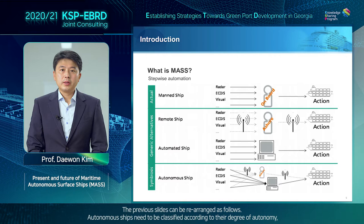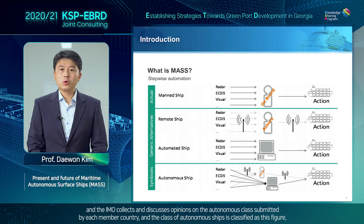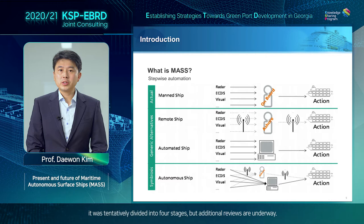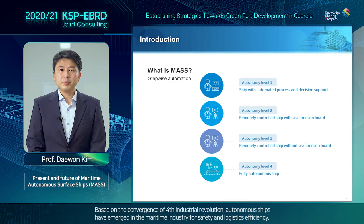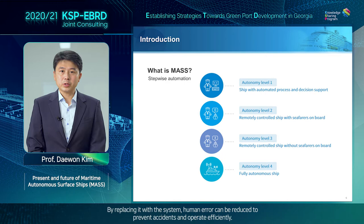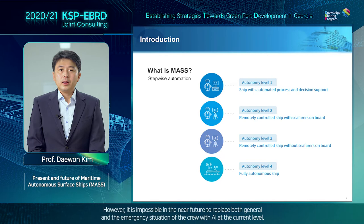The previous slides can be rearranged as follows. Autonomous ships need to be classified according to their degree of autonomy, and the IMO discusses opinions on the autonomous classes submitted by each member country. The class of autonomous ship is classified as shown in this figure — it was tentatively divided into four stages, but additional reviews are underway. Based on the convergence of the first industrial revolution, autonomous ships have emerged in the maritime industry for safety and logistics efficiency.